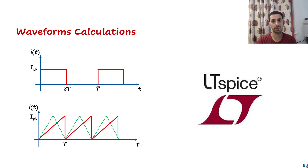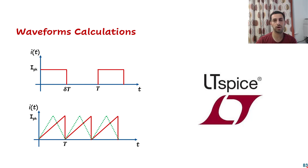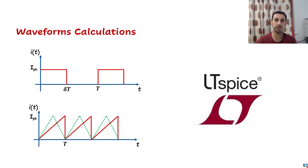This is a continuation of power electronics lectures. Last time we covered how we derive the RMS value for any waveform and some common waveforms in power electronics. Today we are going to cover how we use LTSpice to confirm and calculate the average value and RMS value for different waveforms, and also how we use it to calculate average power by any component.